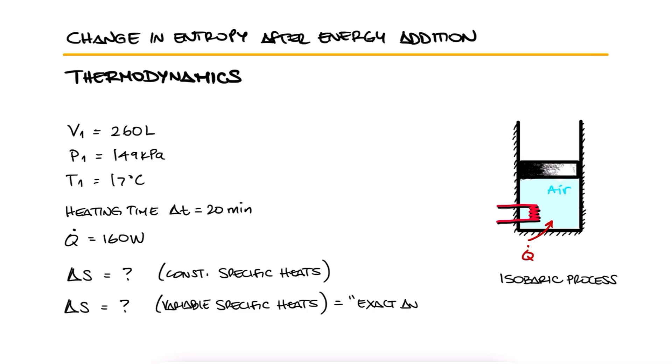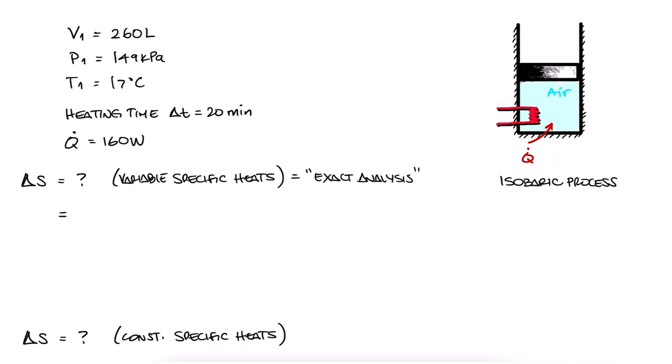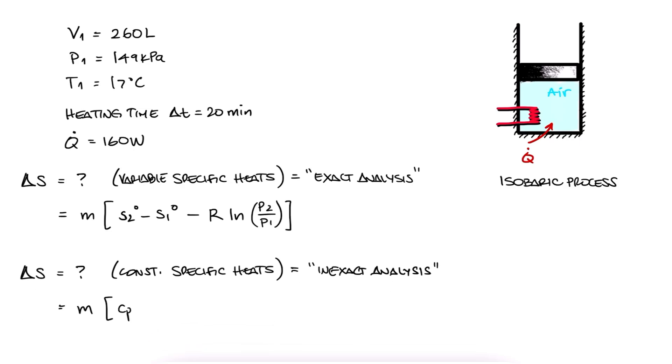If using the exact analysis, which is the variable specific heats option, the entropy change is given by this expression in terms of the reference entropy and pressure values. If using the inexact analysis or constant specific heats, the entropy change is given by this expression in terms of Cp and pressures.